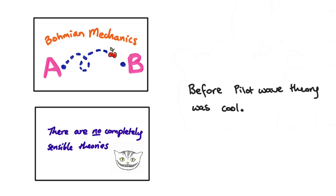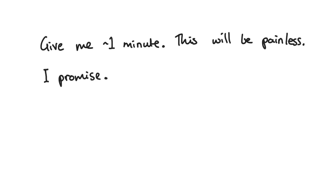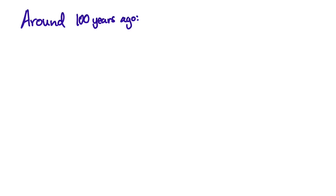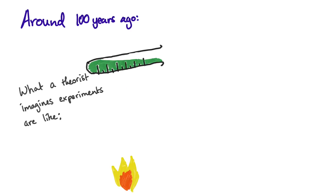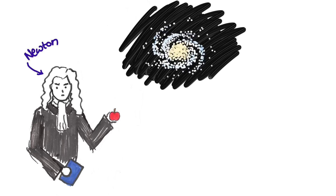So what is Bohmian mechanics? To answer that, I better quickly explain what quantum mechanics is. One hundred or more years ago, physicists were finally able to do experiments on really small things like atoms. They weren't really expecting to be surprised. Newton's laws and the rest of physics as they knew it should apply just as well to galaxies as to electrons. But that's not what they found.